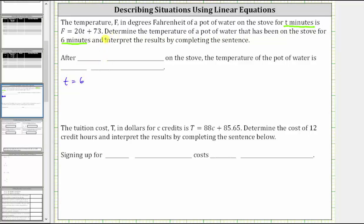We also know F, the temperature in degrees Fahrenheit, equals 20T plus 73. And therefore, to determine the temperature of the pot of water after six minutes, we substitute six for T in the equation.